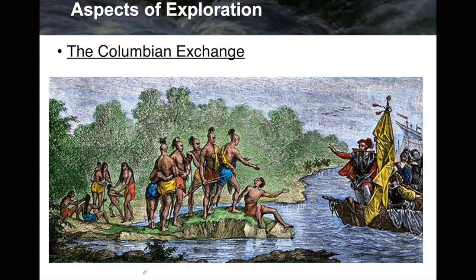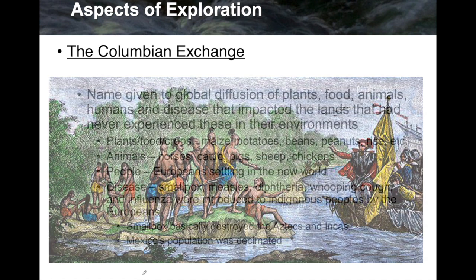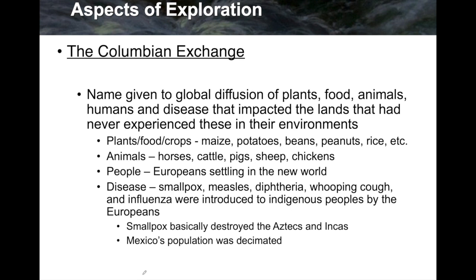Now we're going to look at the Columbian Exchange. There's a picture of Europeans landing with indigenous peoples waiting for them. The Columbian Exchange was a name given to the global diffusion of plants, food, animals, humans, and disease that impacted lands that had never experienced these before. Examples of plants and crops include maize, potatoes, peanuts, and beans. Animals include horses, cattle, pigs, sheep, and chickens. Diseases introduced to indigenous peoples by Europeans included smallpox, measles, diphtheria, whooping cough, and influenza.